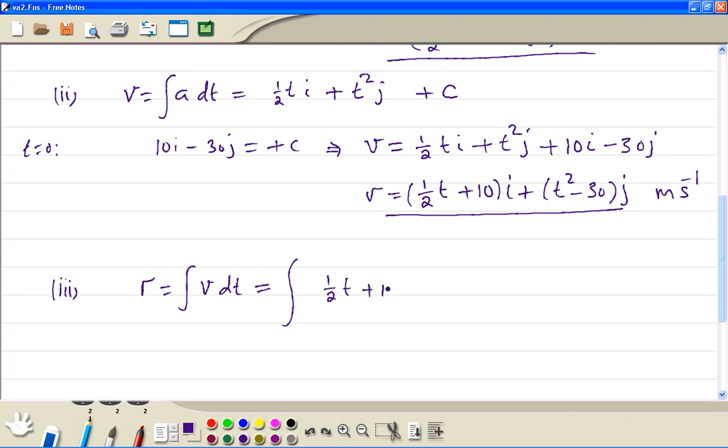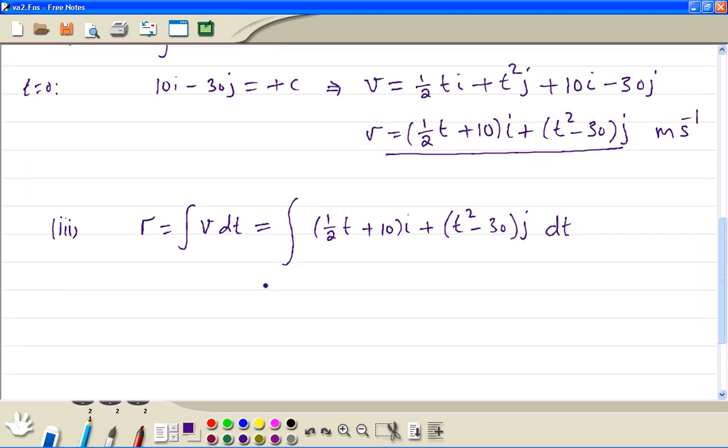Half t plus 10i, t squared minus 30j. So we get t squared plus 10t i. Then we get one third t cubed minus 30t j plus the constant k.